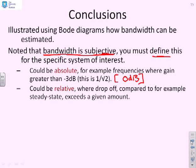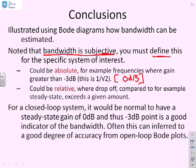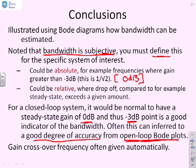We have noticed that if you're talking about closed loop, then the steady state tends to be 0dB. So the absolute and the relative are the same. For closed loop, it would be normal to have a steady state of 0. So the minus 3dB point is a good indicator of bandwidth. What we've said is this can be inferred to a good degree of accuracy from open loop Bode plots. As long as you're not looking for decimal places in your answer, that will be close enough. The key thing here is the gain crossover frequency is often given automatically. So if you're using the open loop Bode plot and the gain crossover frequency is given, it saves you extra computation.